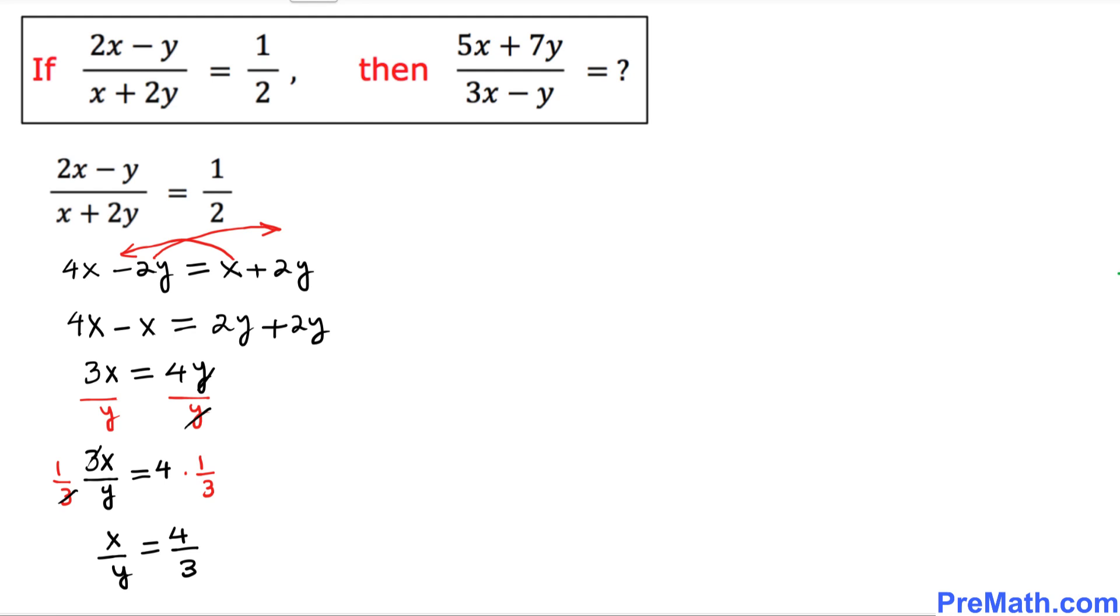From here, we can see that x corresponds to 4 and y corresponds to 3. So our x value is 4 and y value is 3. That is the first step.